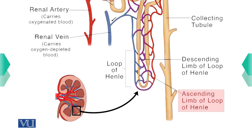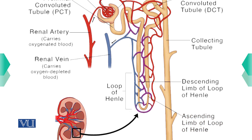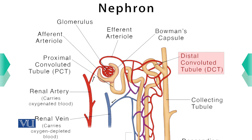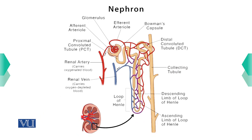The ascending loop of Henle is completely impermeable to water — no water absorption can occur in it. The ascending loop of Henle then leads to more convoluted tubules called the distal tubules, and these distal tubules lead to the collecting duct, which leads to the ureters. This is how urine is formed and excretory waste is produced and removed from the human body.